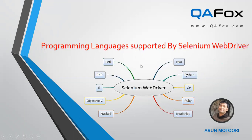That means you can use Java, Python, C#, Ruby, JavaScript, Perl, PHP, R, Objective-C, or Haskell to create your Selenium automation scripts with Selenium WebDriver. Each and every one of these programming languages can be used to build your automation scripts.